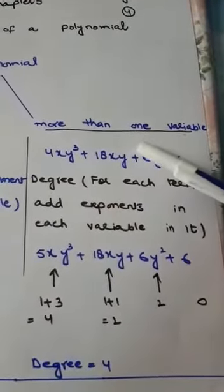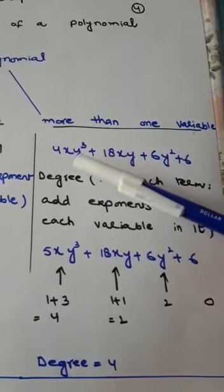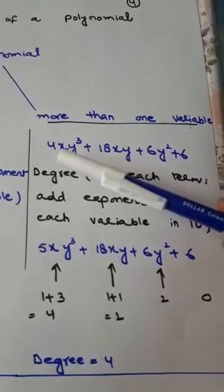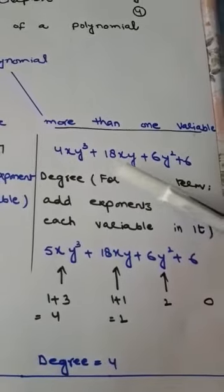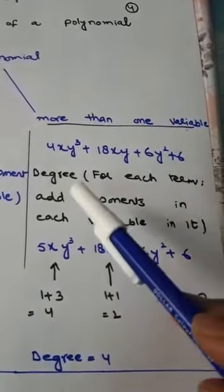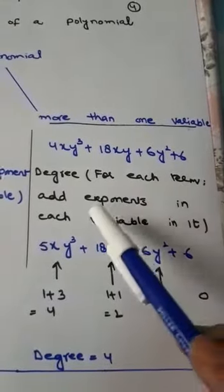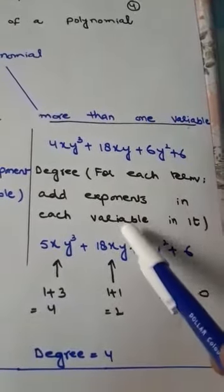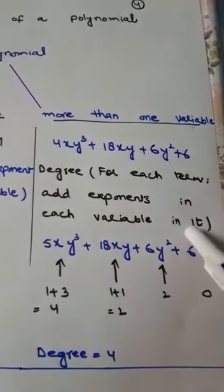Now in this case when we have more than one variable, in this one we have two variables x and y. For the degree, for each term add exponents in each variable in it.